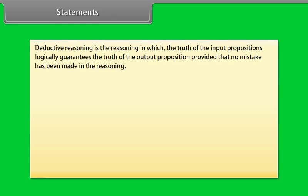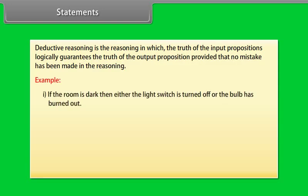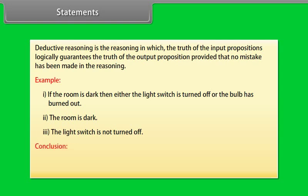Deductive reasoning is reasoning in which the truth of the input propositions logically guarantees the truth of the output proposition, provided that no mistake has been made in the reasoning. For example: (1) If the room is dark, then either the light switch is turned off or the bulb has burned out. (2) The room is dark. (3) The light switch is not turned off. Conclusion: The bulb has burned out.